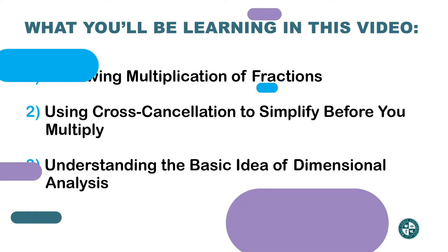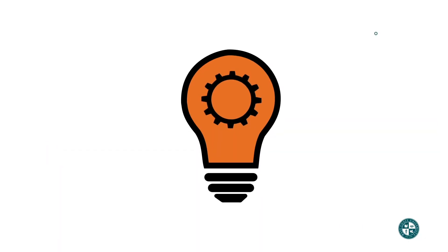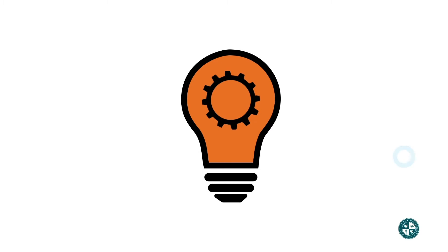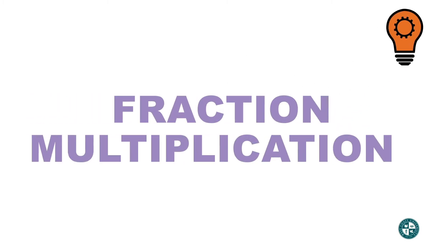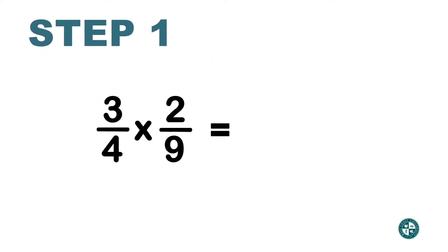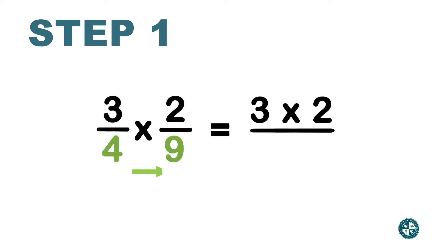The basic idea behind dimensional analysis is to multiply fractions. I'm just going to review how you multiply fractions. Basically what you do is you multiply the top numbers, the numerators, and then you multiply the bottom numbers, the denominators.